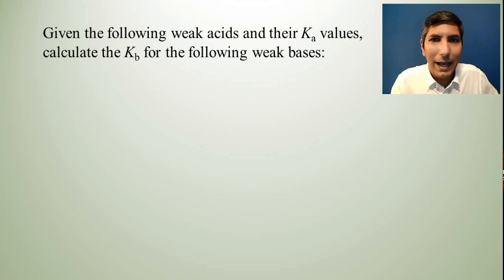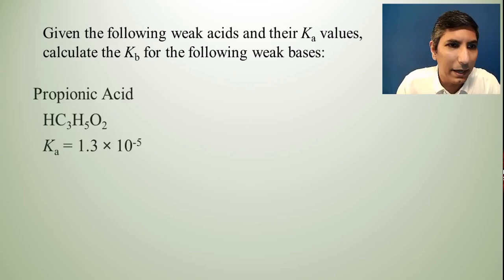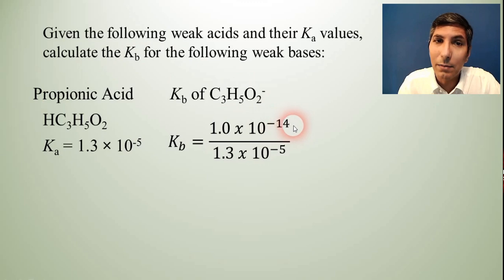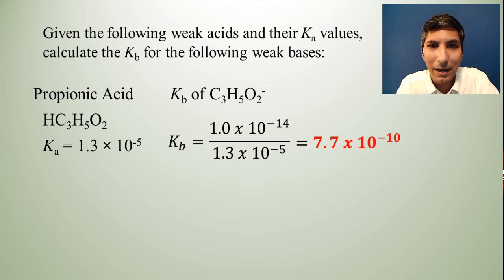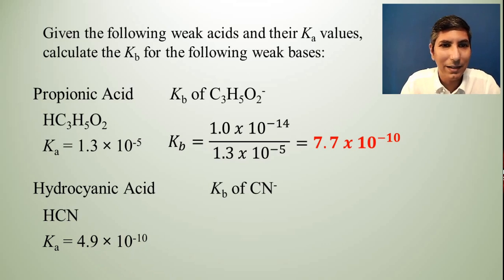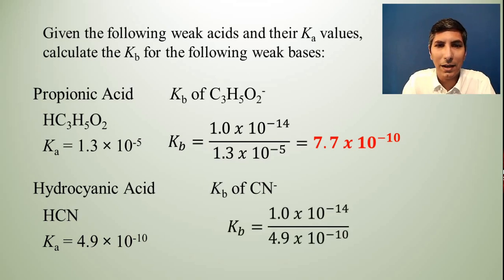Let's take a look at some weak acids and their Ka values. Let's calculate the Kb for these weak bases. So here's propionic acid and its Ka. So can we figure out the Kb of its conjugate base? And yes, we can. We just have to realize that it's 1 × 10^-14 divided by that Ka value. So when you key that into your calculator, you find that the Kb will be about 7.7 × 10^-10. How about for hydrocyanic acid? Its Ka is 4.9 × 10^-10. Can we find the Kb of the cyanide ion? Well, we sure can. All we have to do is realize that we just have to take 1 × 10^-14 divided by 4.9 × 10^-10. And when you punch that into your calculator, your Kb value is 2.0 × 10^-5.